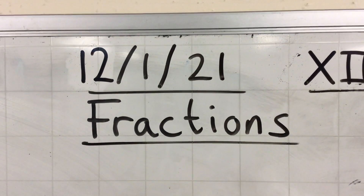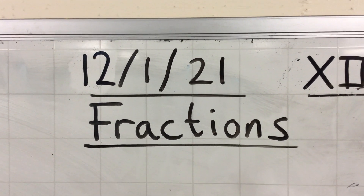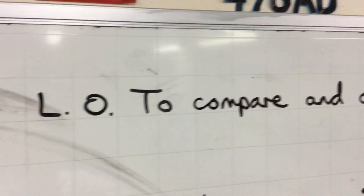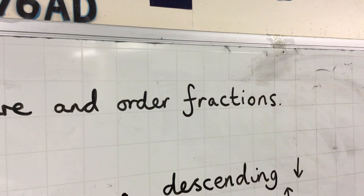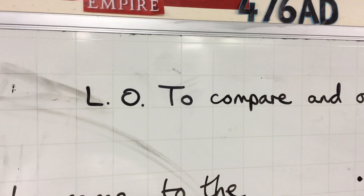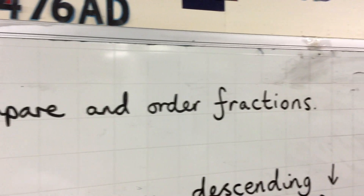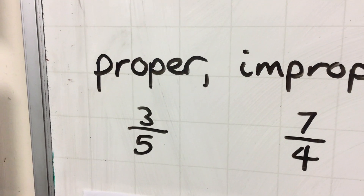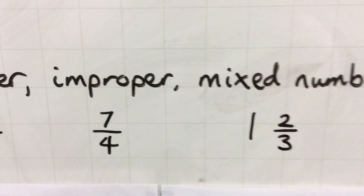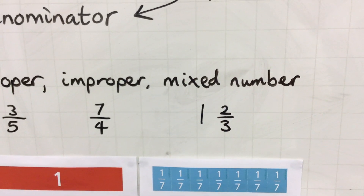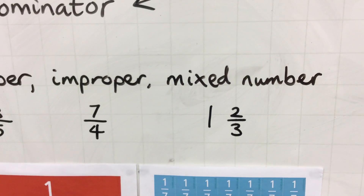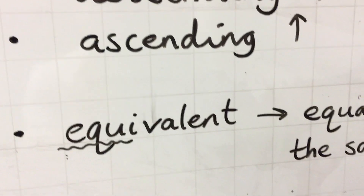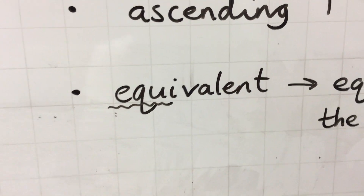Hello Year 5 — 12th of January 2021 — fractions again today. It is to compare and order fractions. We started a little bit of this yesterday, comparing and ordering fractions, focused on fractions that were less than one — proper fractions. Today we're going to look more at improper and mixed number fractions. Remember a few key things: we have the keyword 'equivalent' — equivalent fractions.